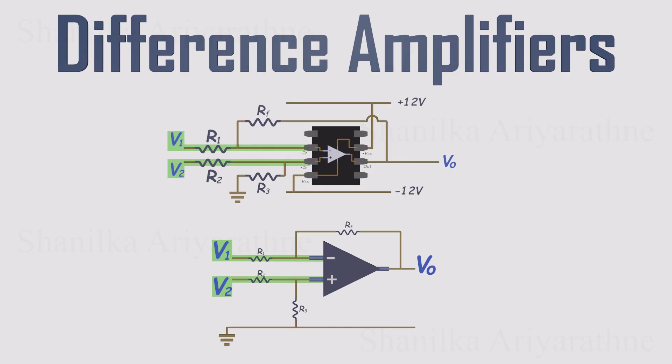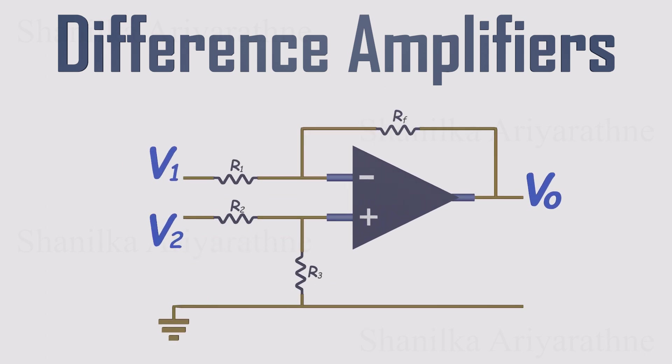and the other signal fed into the non-inverting input through its own resistor. And that's it. That's the classic difference amplifier, often simply called a subtractor in its simplest form.